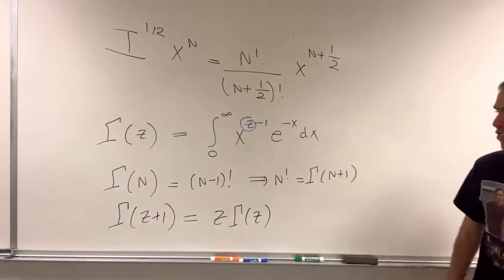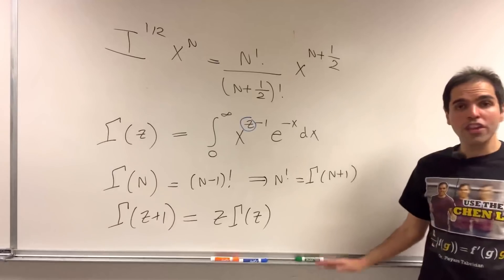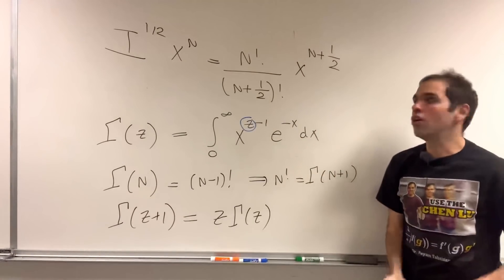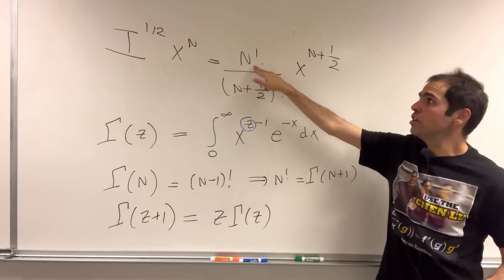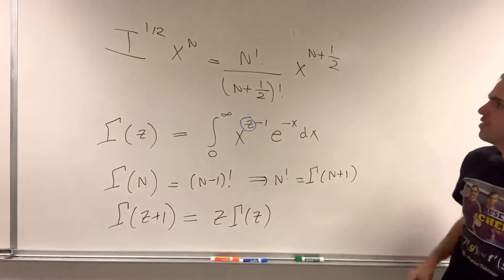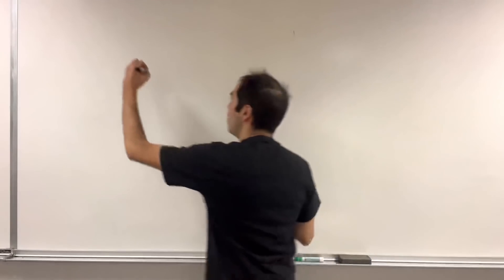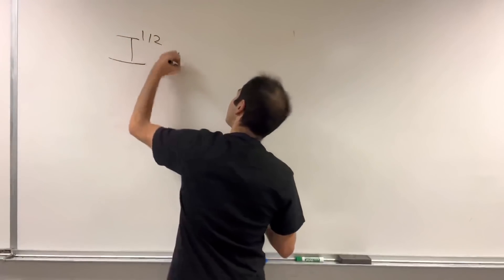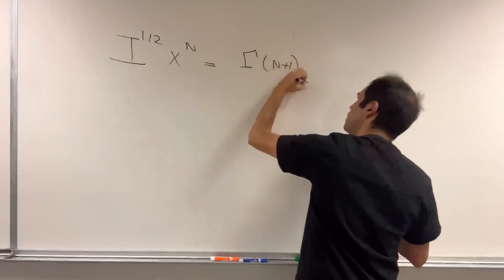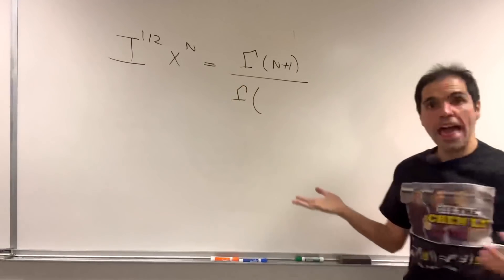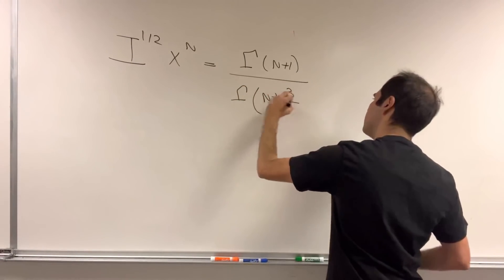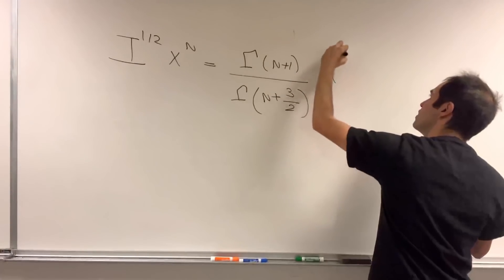So, slightly different, but the cool thing is, we can use this gamma function now to define the half integral of x to the n. All you do, you replace factorials by gamma of stuff plus 1 because of this property. And so now, the half integral of x to the n becomes simply gamma of n plus 1 over gamma of n plus 3 halves times x to the n plus 1 half.